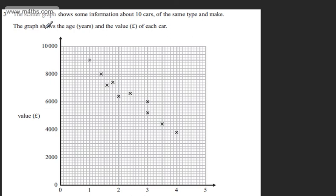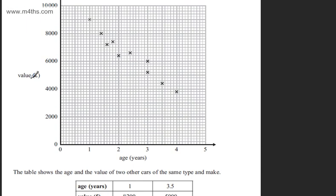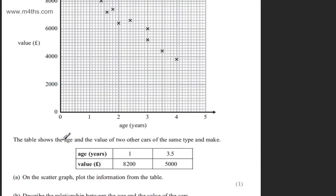This is question number three. The scatter graph shows information about 10 cars of the same type and make. The graph shows the age in years and the value in pounds of each car, with value here and age here. The table shows the age and value of two other cars of the same type and make.